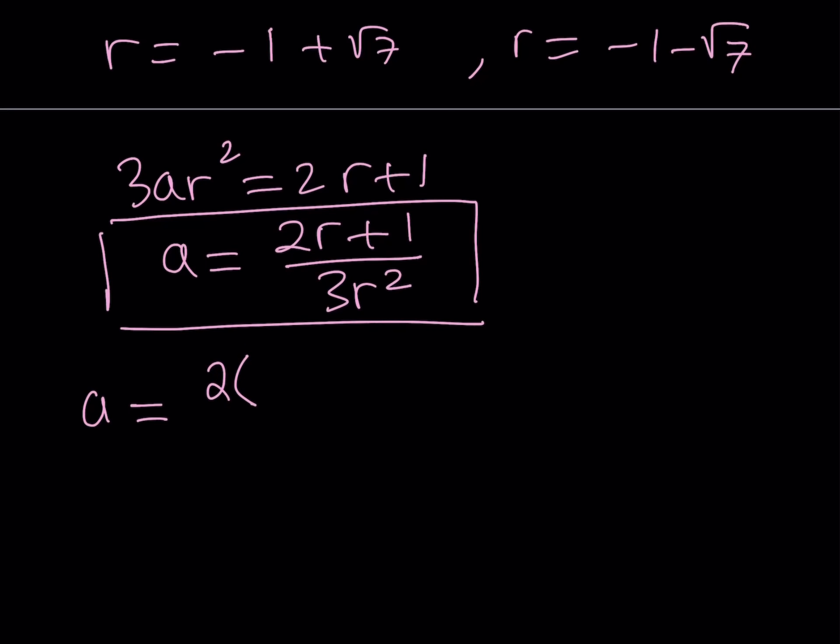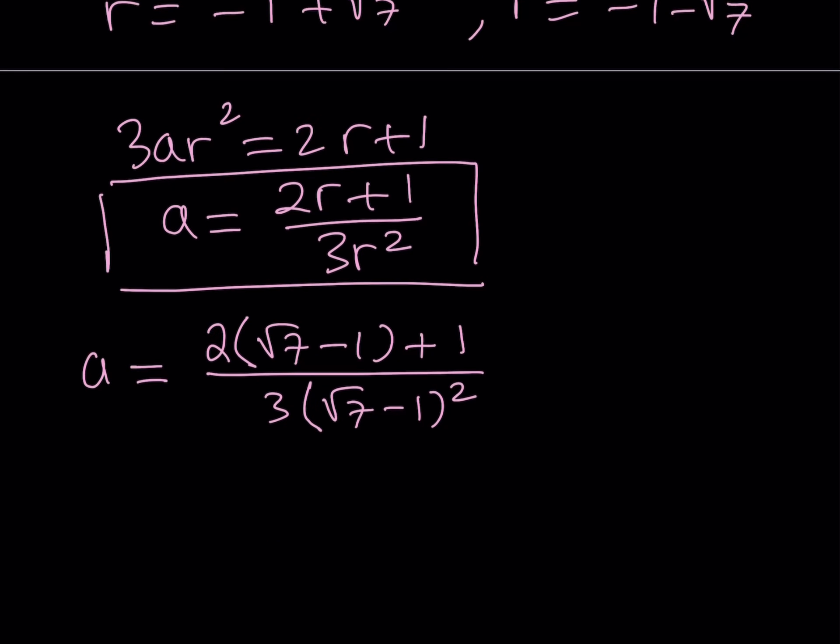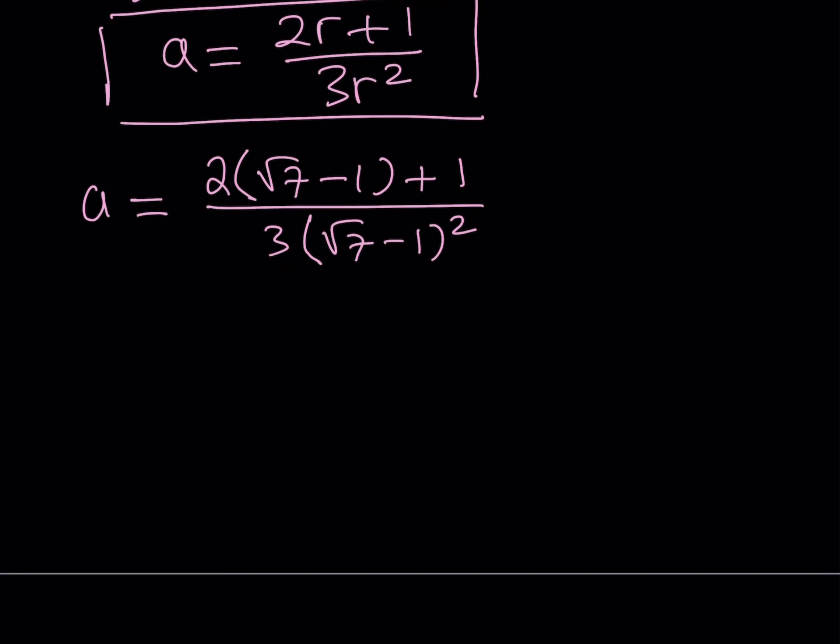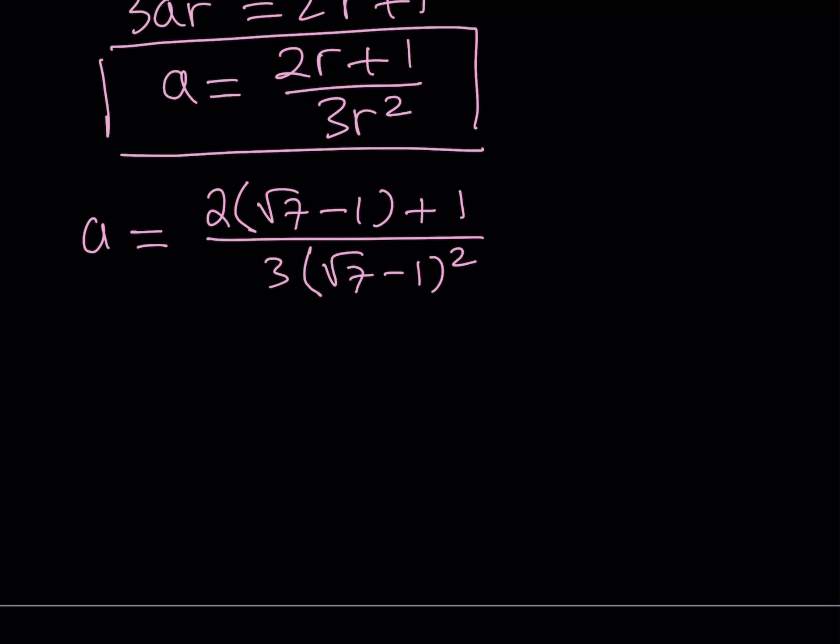So we're going to replace. Let's write the first r value as 2(√7 - 1) + 1 divided by 3(√7 - 1)². This is going to give us the first a value and then the second a value is going to be very similar. Let's simplify this. This gives me 2√7 - 1 on top. The bottom is going to give me 8 - 2√7.